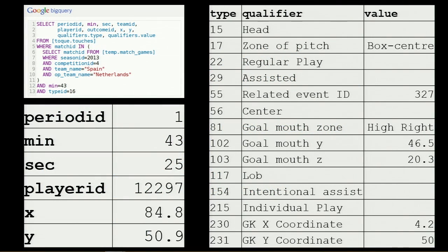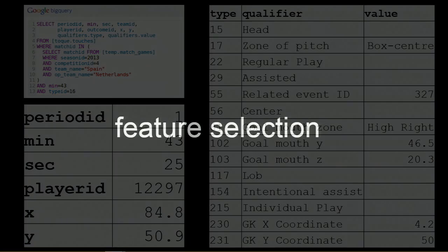To give an idea of how rich this data was: there was a fantastic header by Robin van Persie in one of the first games of the World Cup. We can see he was almost 16 yards out — pretty long for a header — that he caught the keeper Iker Casillas off his line, who was 4.2 meters out, and even where the ball crossed the goal line. This is the kind of information we were mining to produce our features.